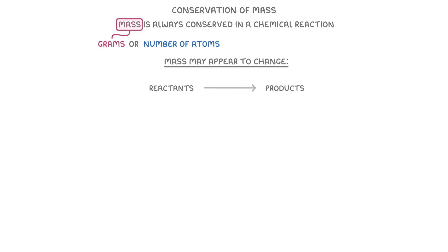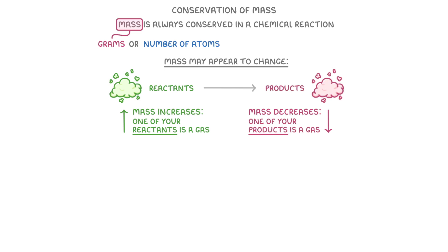Sometimes though, the mass may appear to change. If the mass seems to increase, it's probably because one of your reactants is a gas, while if the mass decreases, it's probably because one of your products is a gas.